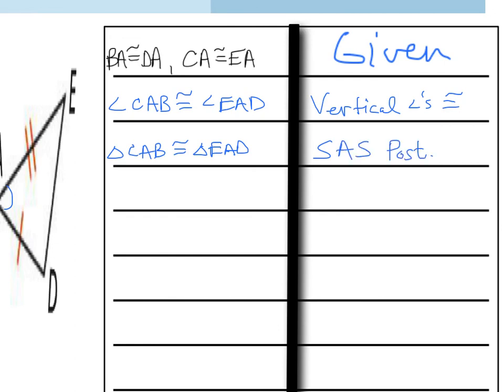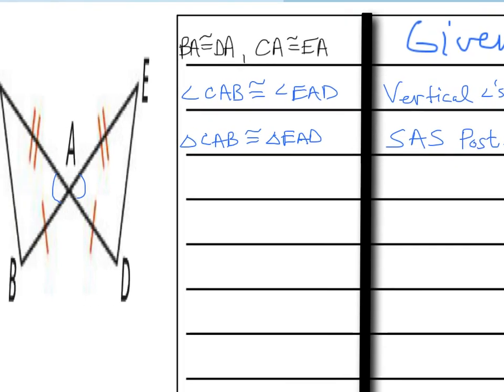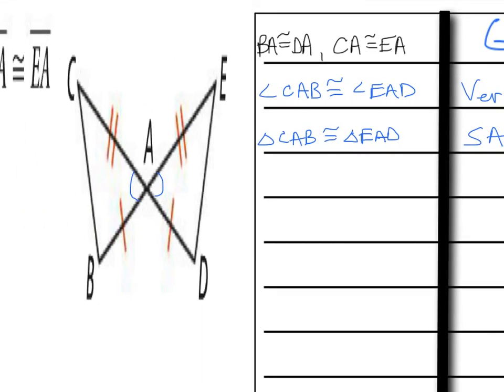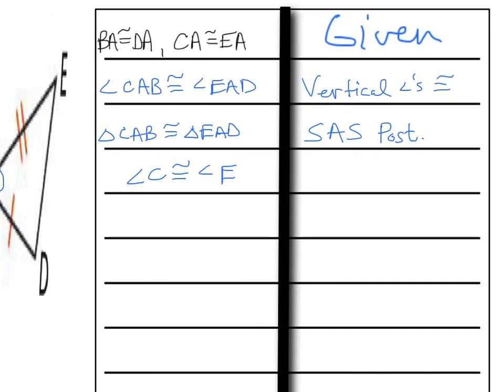Once I've done that, now that I've proven triangles congruent, I can say any side I want, any angle I want, that's corresponding, is congruent to each other. In the prove, they want to know why angle C and angle E are congruent to each other. They're congruent because I've already proven the triangles are congruent — so CPCTC, corresponding parts of congruent triangles are congruent.